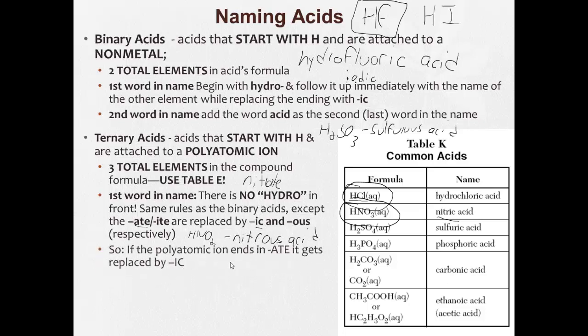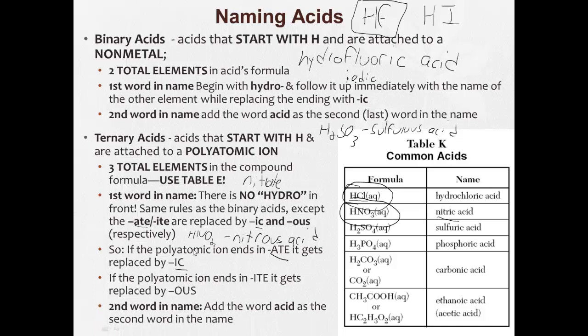So if the polyatomic ion ends in -ate, it's going to get replaced by -ic. If the polyatomic ion ends in -ite, it gets replaced by -ous. And don't forget to put the acid at the end.